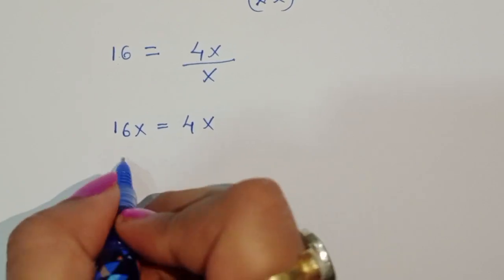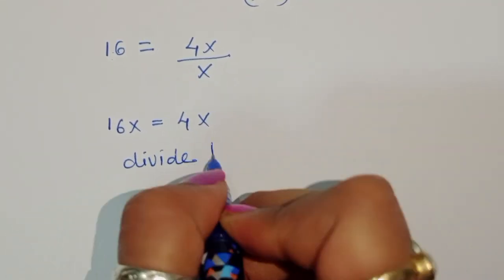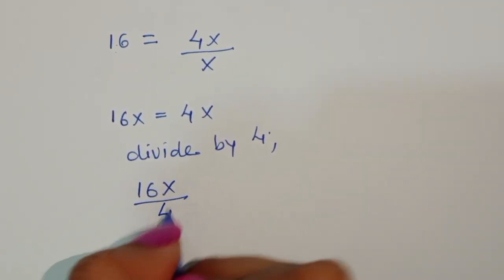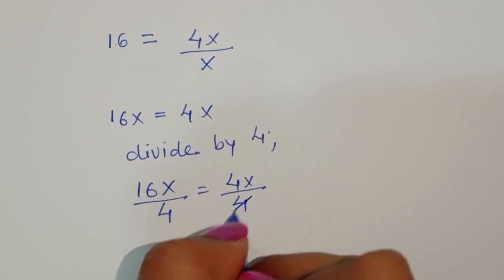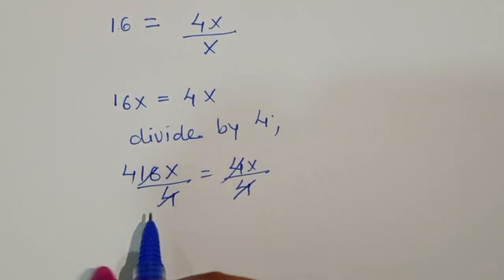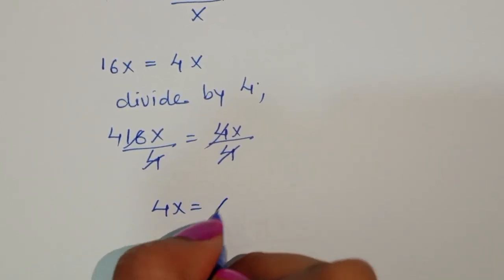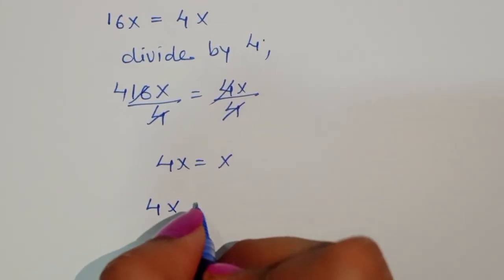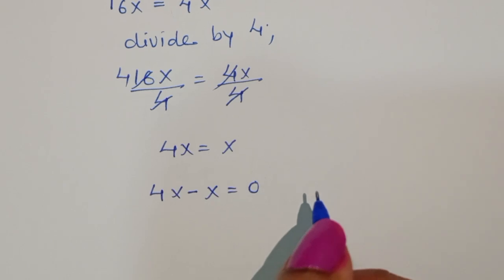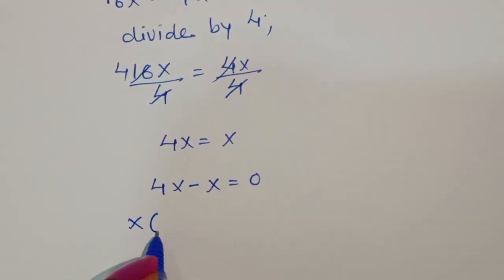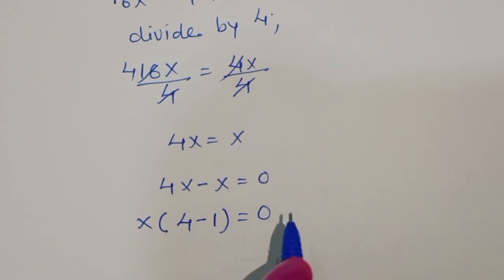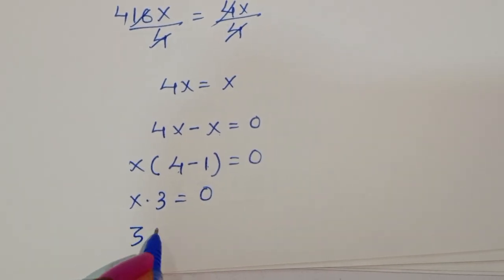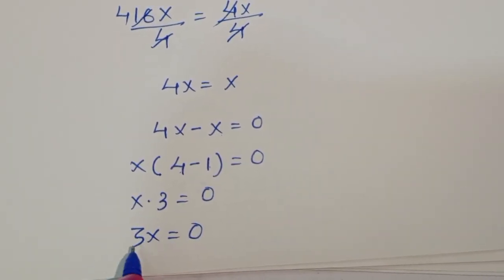We divide both sides by 4. So 16x divided by 4 is equal to 4x divided by 4, giving 4x is equal to x. Rearranging: 4x minus x is equal to 0. Taking x common: x times (4 minus 1) is equal to 0.